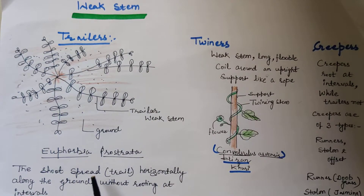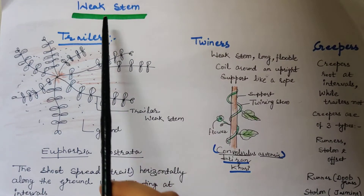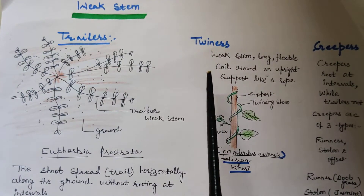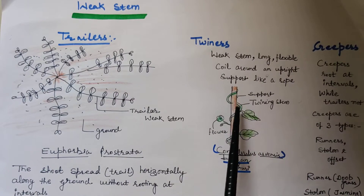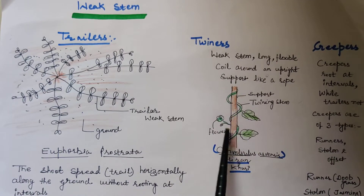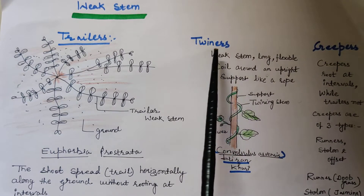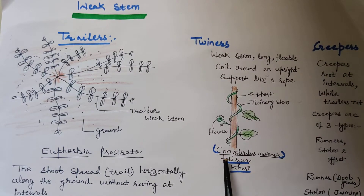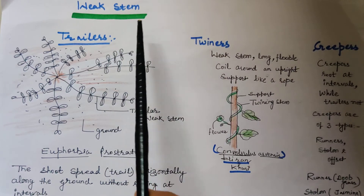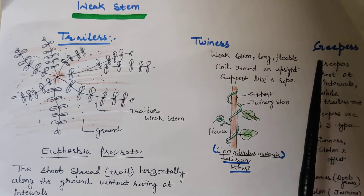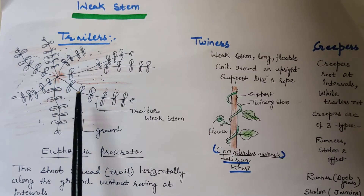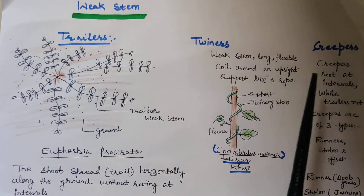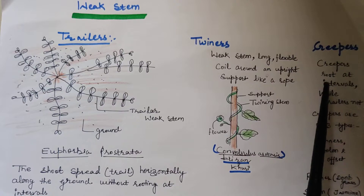The second type under weak stem is twiners. Twiners are weak, long, flexible stems that coil around an upright support like a rope. Example is Hirankhuri, scientific name Convolvulus arvensis. The third type is creepers — they root at intervals, showing root formation at intervals, which differentiates them from trailers. In trailers the stem spreads horizontally on the ground without rooting, while in creepers roots form at particular intervals.